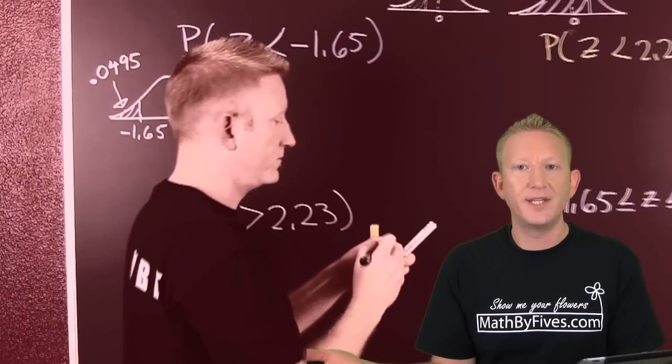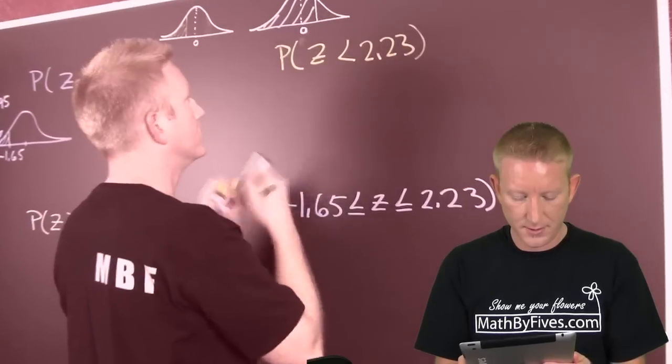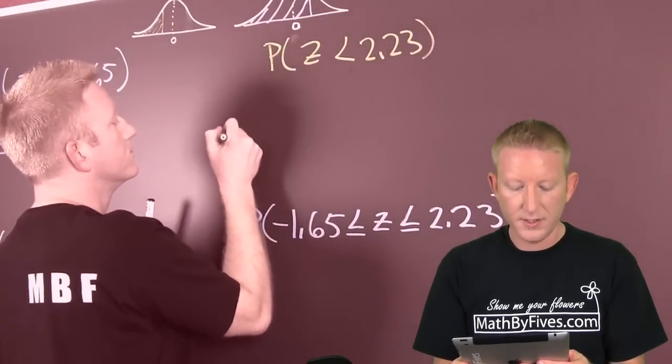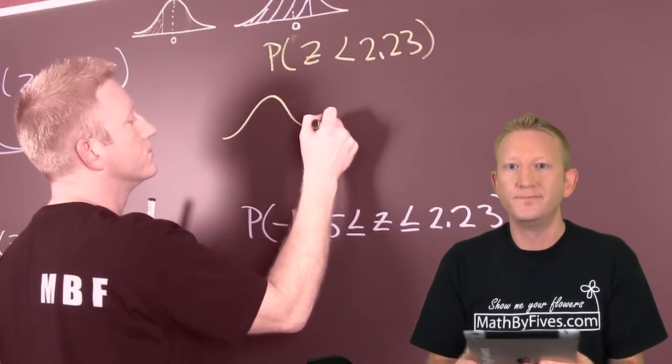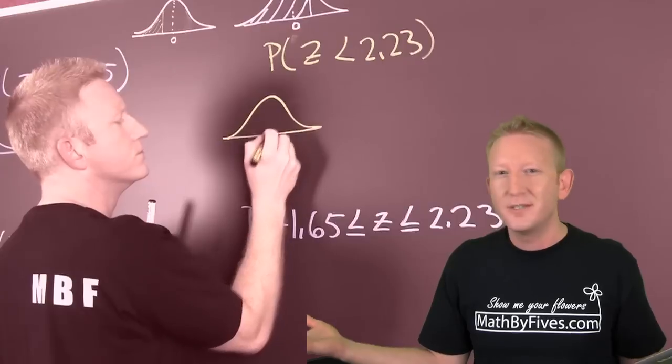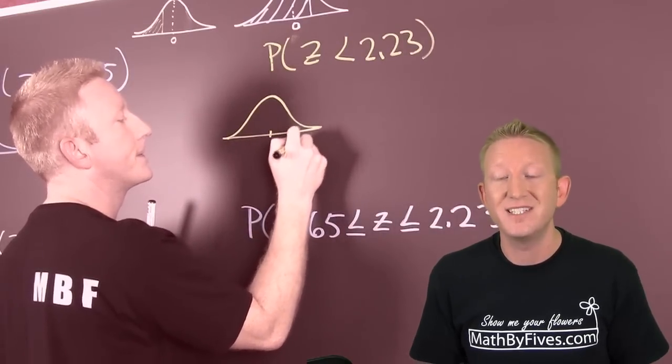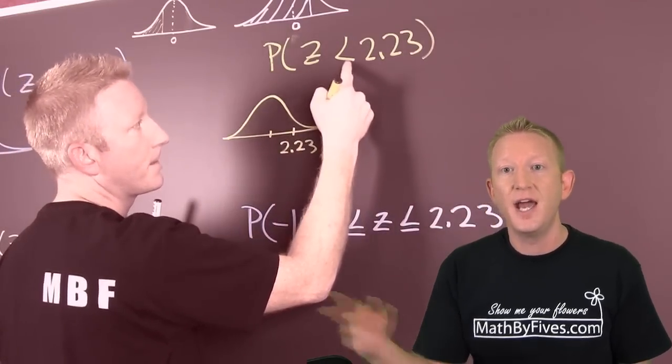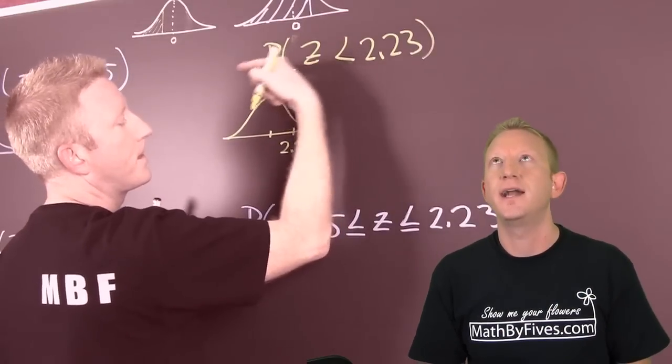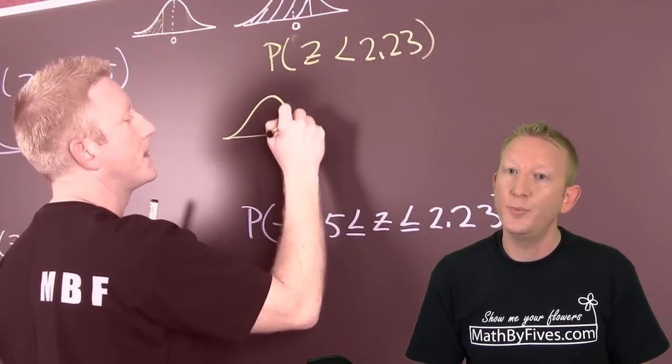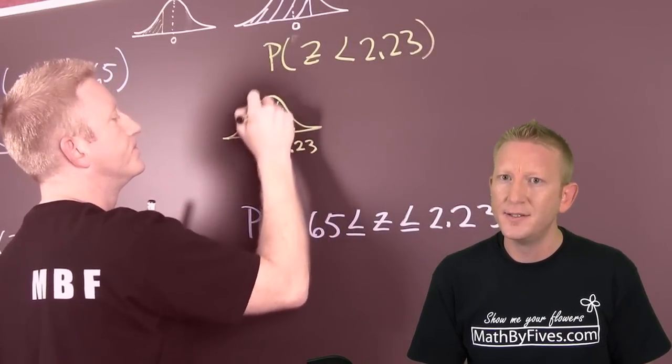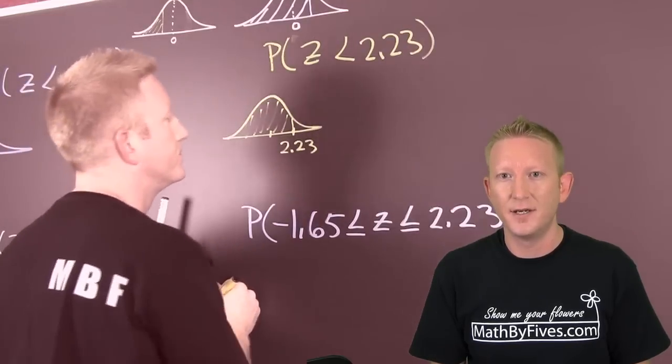What if we're looking for a probability that is less than 2.23? All right, so what do we do? We're on the right side because our z values are positive, and we're looking for the probabilities that it's going to be less than 2.23 standard deviations away from the mean.